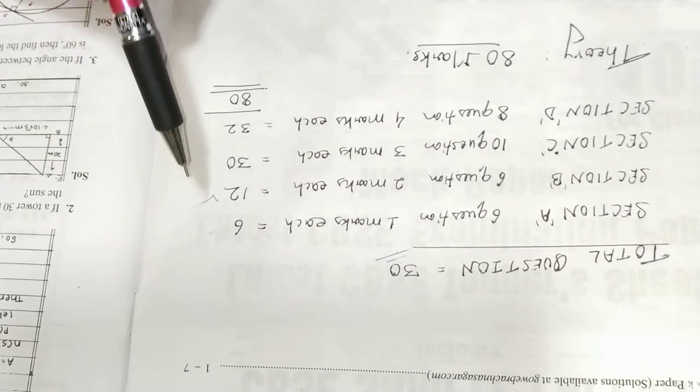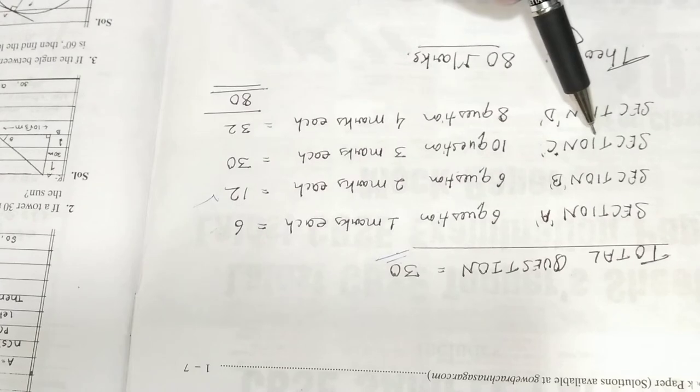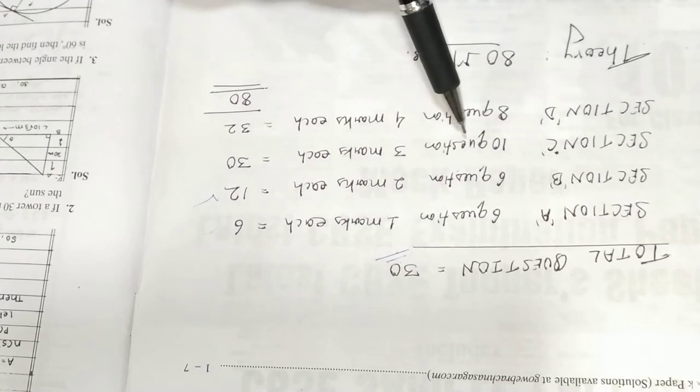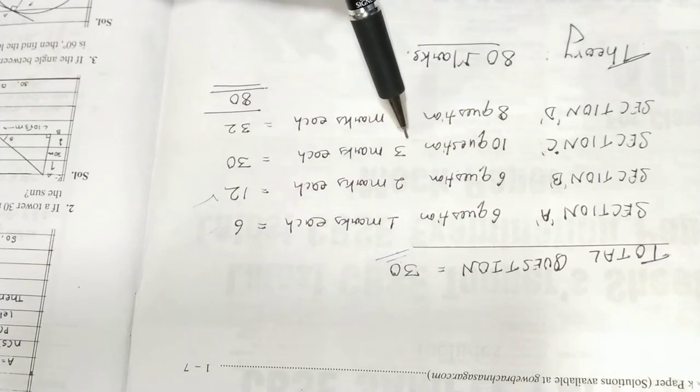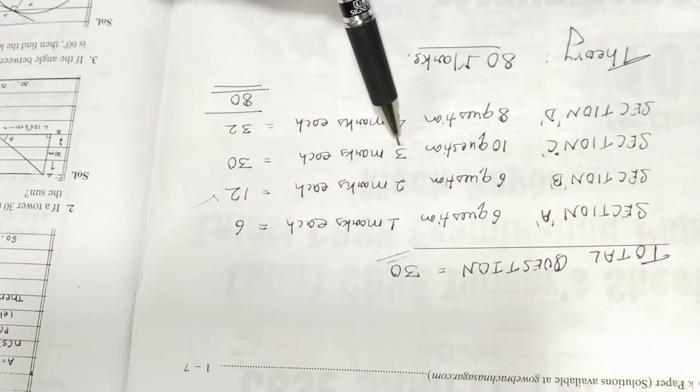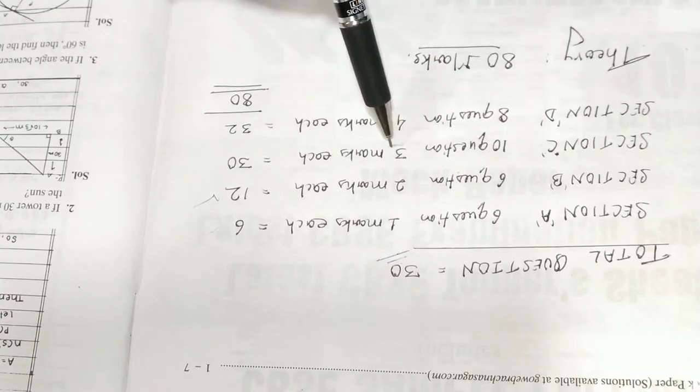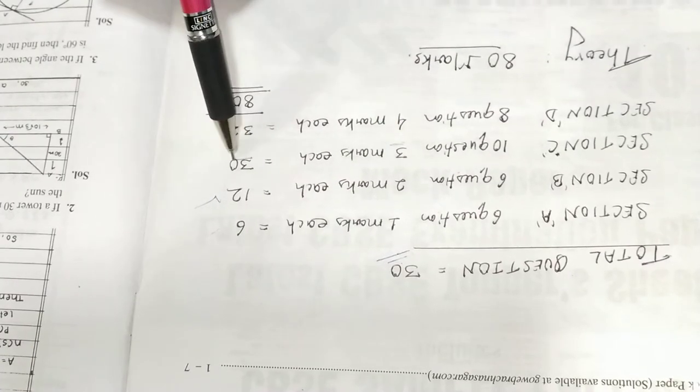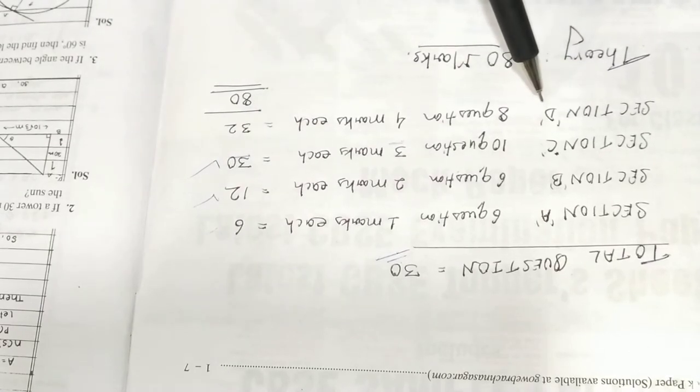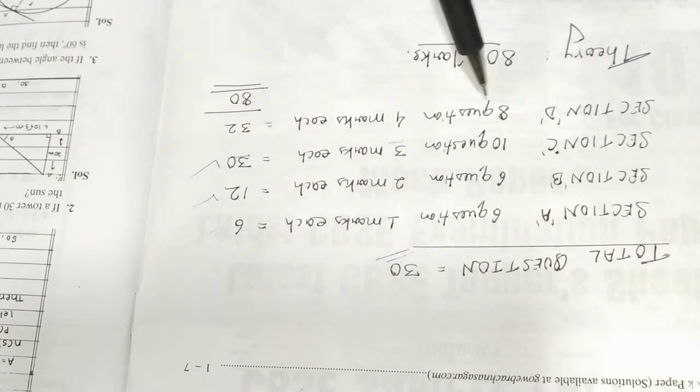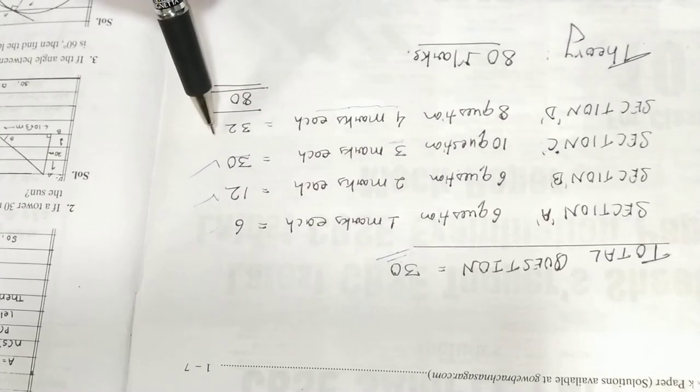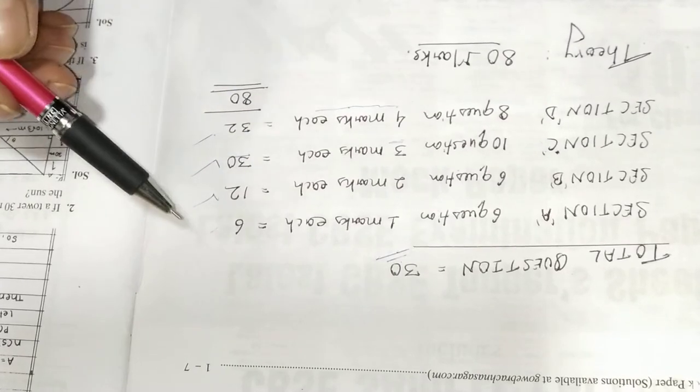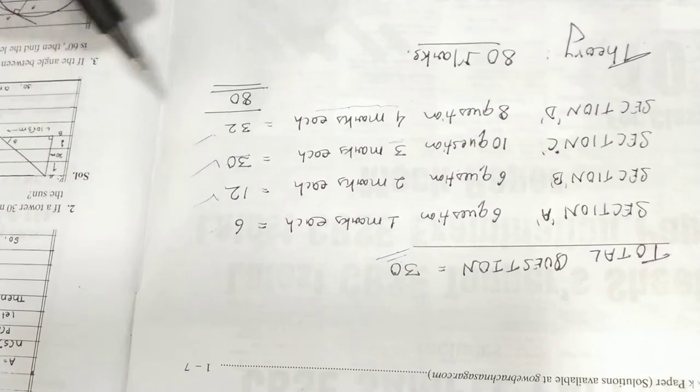Next is section C. Section C has highest number of questions - 10 questions, and each question is for 3 marks, so 10 into 3 equals 30 marks. In the last section, section D, there are 8 questions and each question is for 4 marks, so 8 into 4 equals 32 marks. Now the total is 6 plus 12 plus 30 plus 32 equals 80 marks.